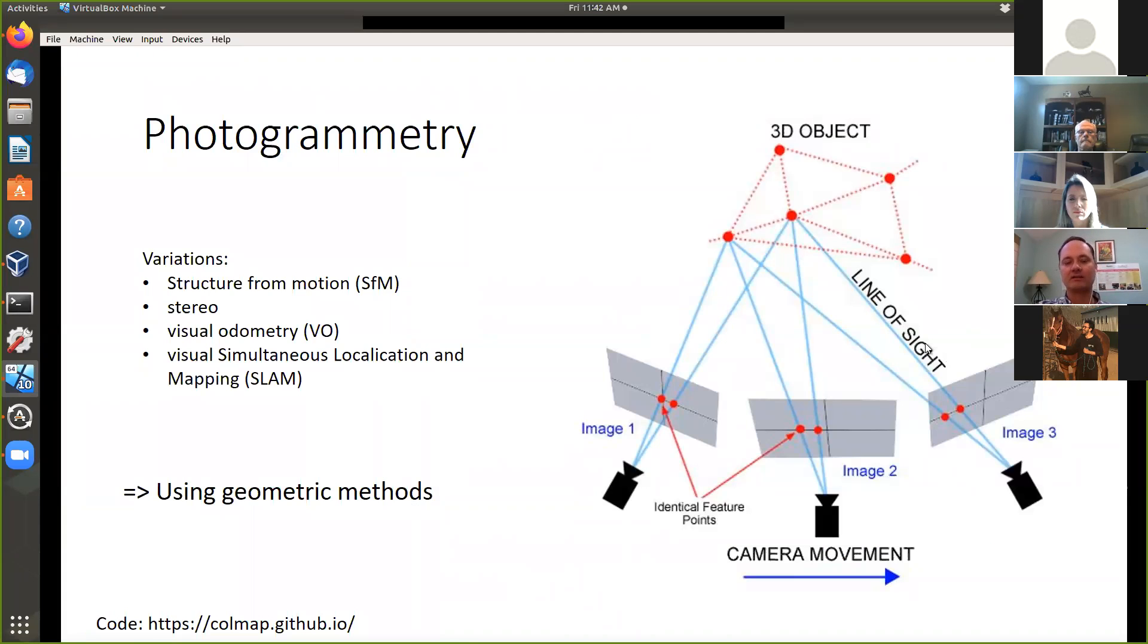Neural nets is one computer vision technique. Another computer vision technique is photogrammetry. It has many different names: structure from motion, stereo, visual odometry, visual SLAM. They all have different emphasis on what they do. But the core thing to know, it's a geometric method. You don't learn things, you do geometry. Here's a picture. You have a 3D object and you take pictures of it. The image is different depending on where you took the picture. You look very carefully at the geometry, do complicated math, and you can do 3D reconstruction.